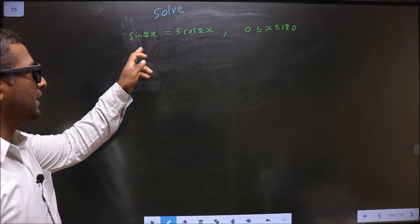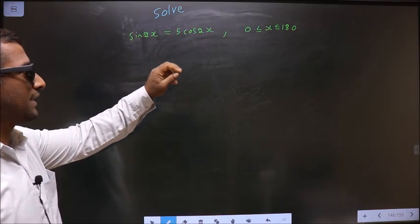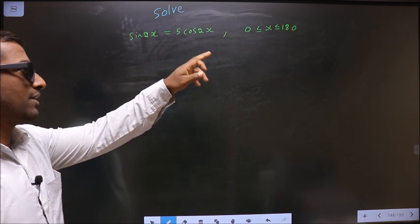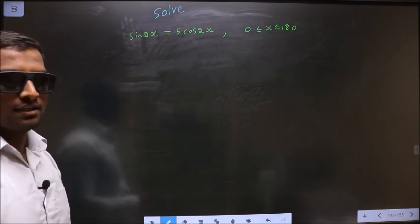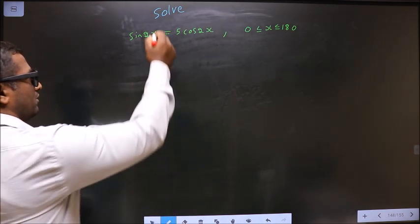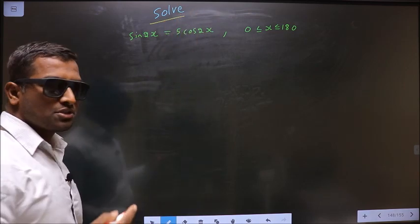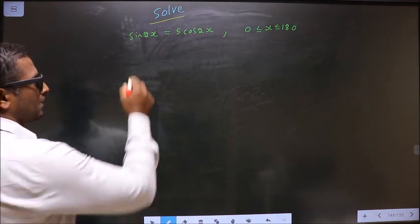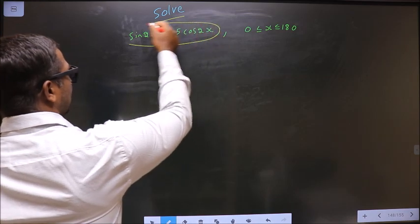Solve sin 2x equal to 5 cos 2x where x lies from 0 to 180 degrees. They told you to solve, so you should find the values for x satisfying this equation.